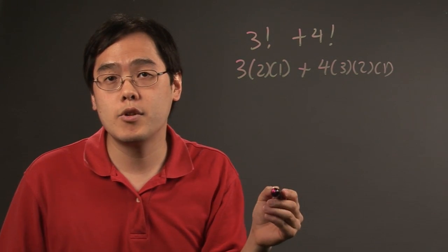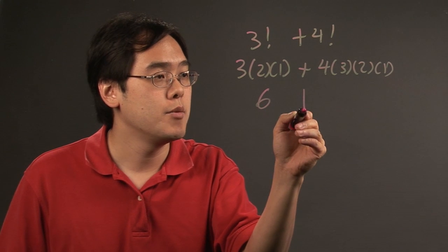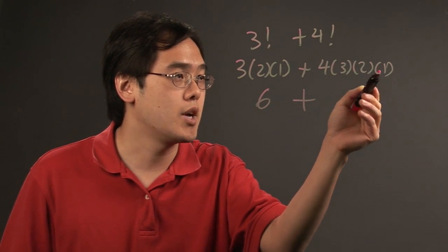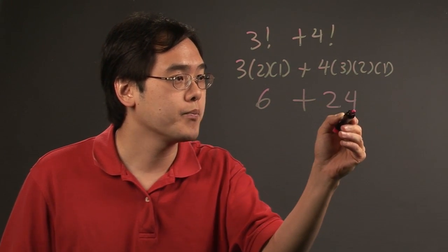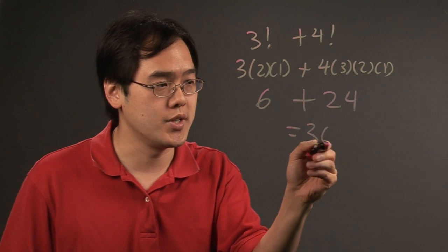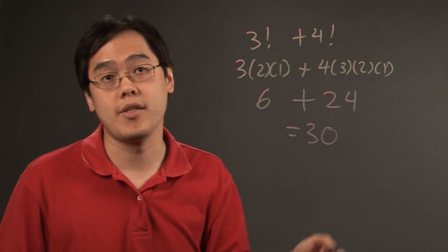You multiply the respective numbers together. 3 times 2 times 1 is 6 plus 4 times 3 times 2 times 1. That's going to give you 24 and then that's going to end up being 30. So, 3 factorial plus 4 factorial is going to be 30.